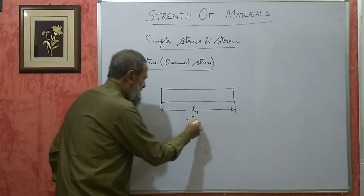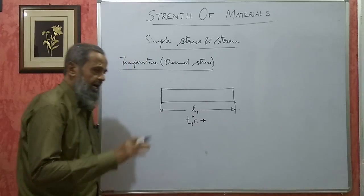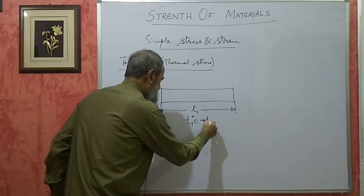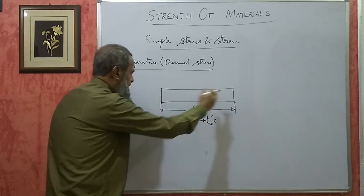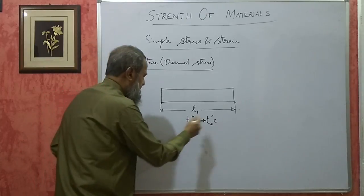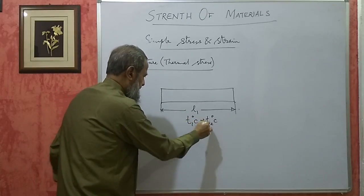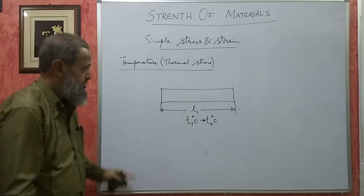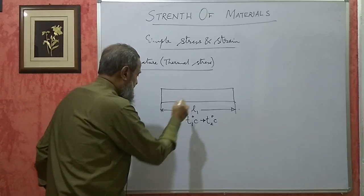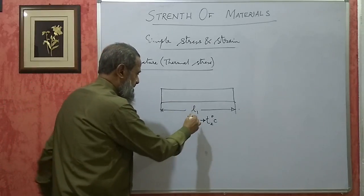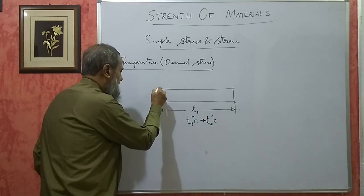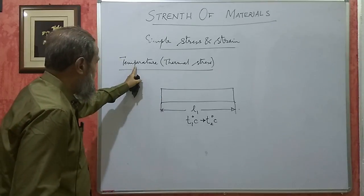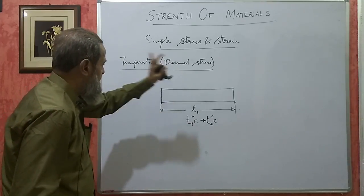If this temperature changes — it may either increase or decrease — if the temperature increases, if T2 is more than T1, then it should expand. If it is cooled, that is T2 is less than T1, then it should contract and its length should decrease. If this change in length is not allowed, then the material will be subjected to a stress.